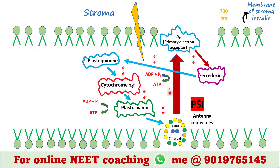These two electrons are accepted by the primary electron acceptor A0. A0 then releases this electron pair, which is accepted by ferredoxin. Ferredoxin loses them, but they are not accepted by NADP+; rather they come to plastoquinone. This electron pair releases extra energy which is used to generate ATP from ADP and phosphate.